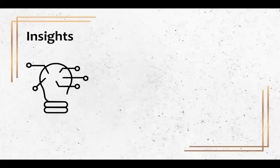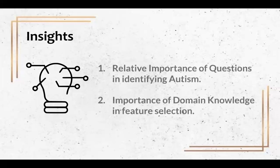An insight we gathered from the analysis of our data is that some questions are not as useful in identifying autistic individuals. For example, an equal proportion of autistic and non-autistic toddlers were indicated to stare with no apparent purpose. This question was constantly ranked among the lowest in feature importance.